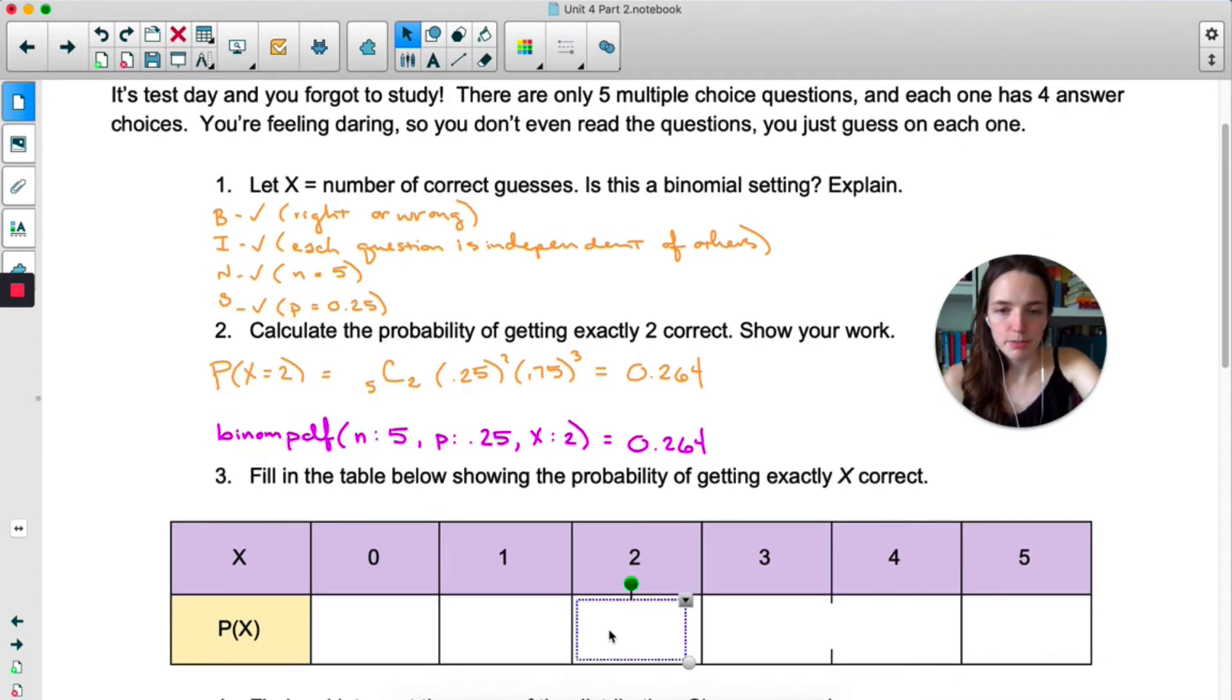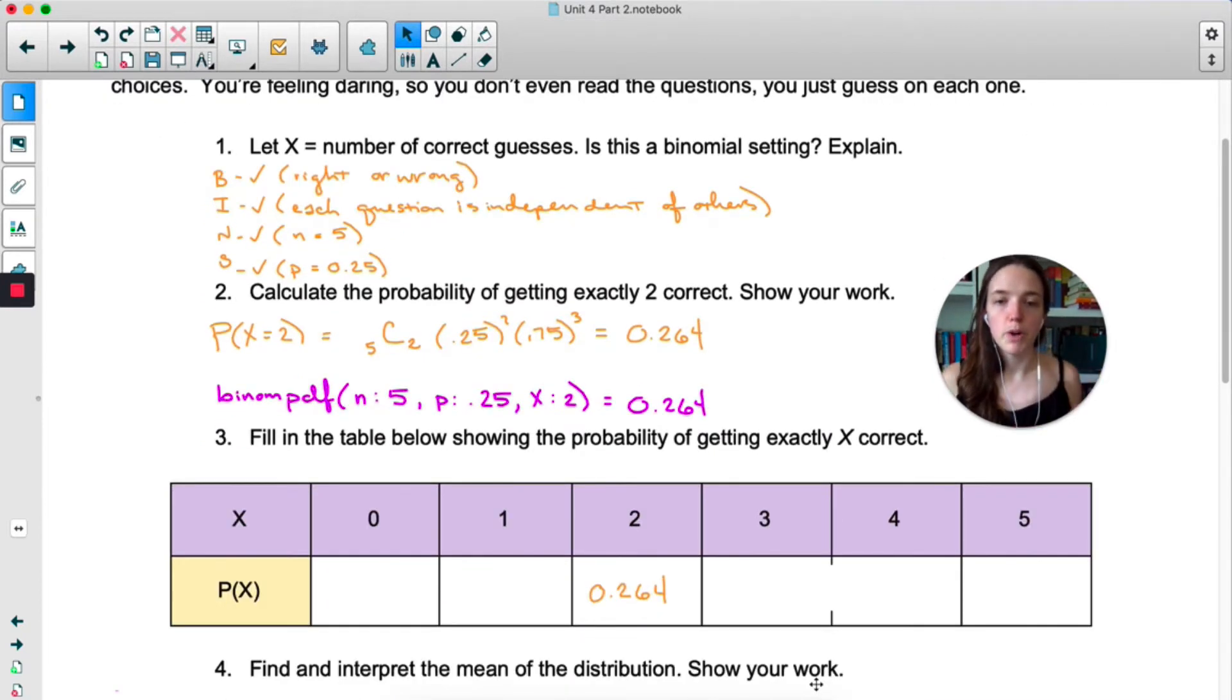Okay, so that was the probability of getting 2 correct. Why don't you take a moment, practice using binom PDF, and fill out the rest of the probabilities in this table. Pause the video and do that now.